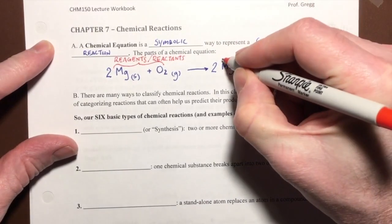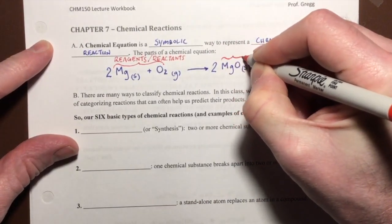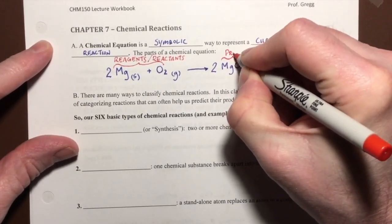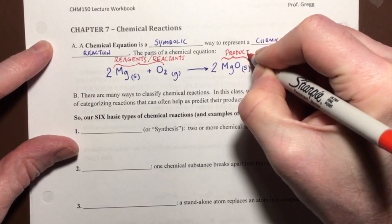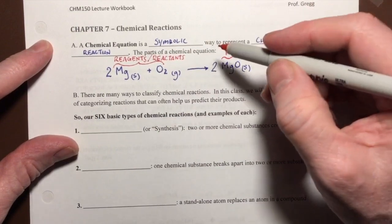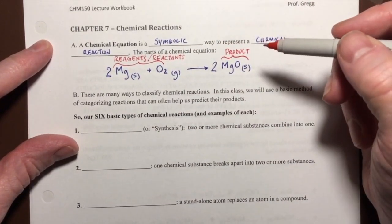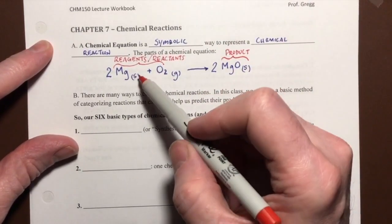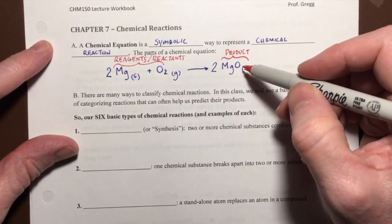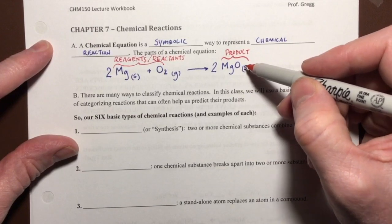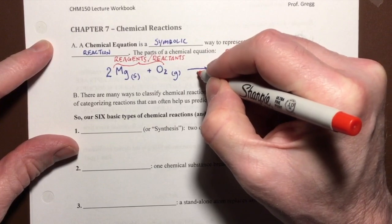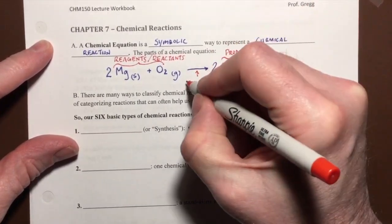Any substance that occurs to the right of this arrow is called a product. Reagents or reactants react together to produce the products. In this case, our two reagents are magnesium solid and gaseous oxygen, and the product we're getting is magnesium oxide solid. This arrow is called the yields arrow or produces arrow.